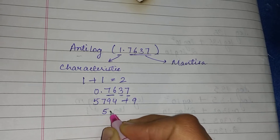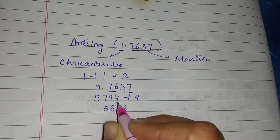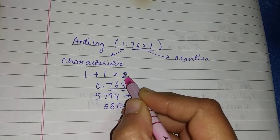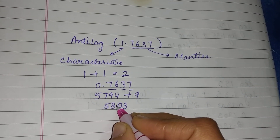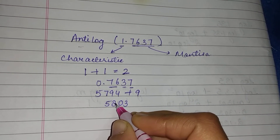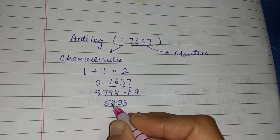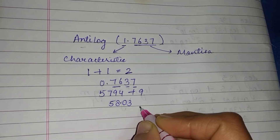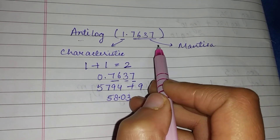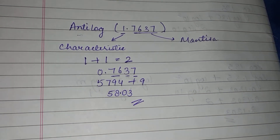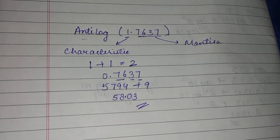We add 5794 plus 9 to get 5803. The characteristic gave us two, which means the decimal point is placed after two digits — giving us 58.03. So the antilog of 1.7637 is 58.03. In the same way, you can find the antilogs of other values as well.